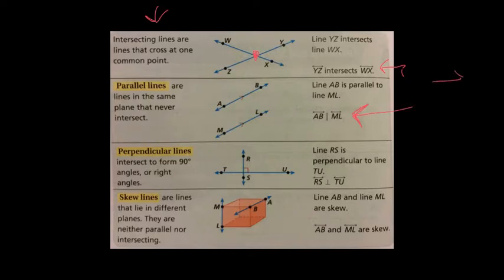But they never intersect. No matter which way you have them go, they will never intersect. And look how we would write that if we want to say two lines are parallel. We would say line AB is parallel to line ML. So that's how we use notation to describe parallel lines.